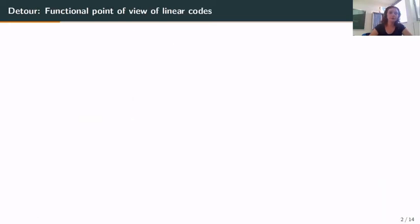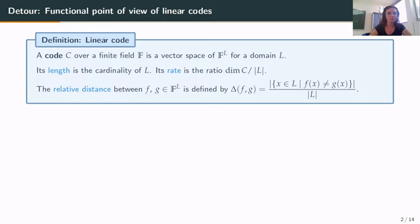So what about codes? I will give you a quite unusual, functional point of view of code. In this talk, a code over a finite field F will be a vector space of functions from L to F for domain L. The length of the code will be the cardinality of L, and the rate will be the ratio of the dimension by the length. We endow the code with a distance: the relative distance between two functions f and g is the number of elements in the domain at which they differ, divided by the size of the domain.